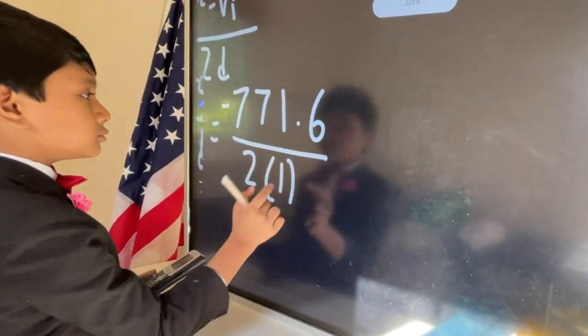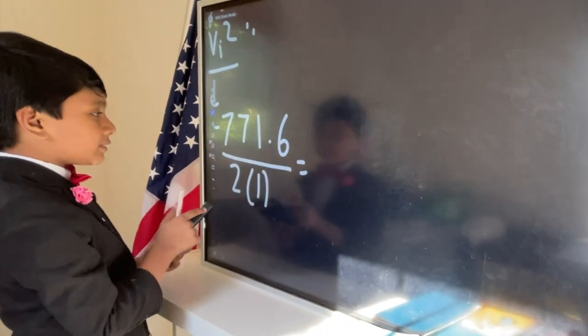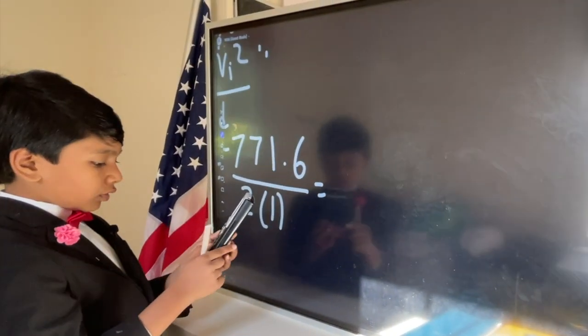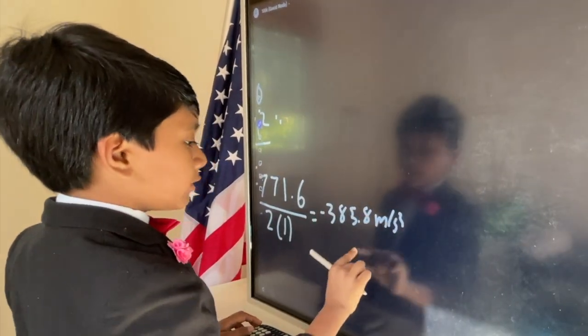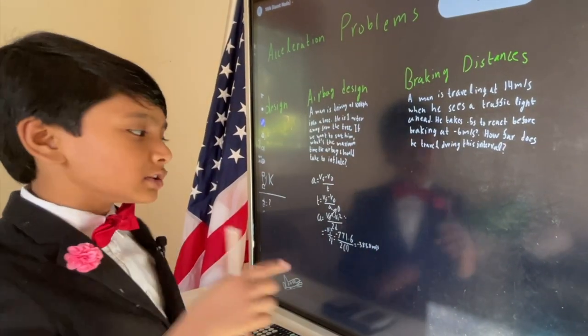So 2 times 1 gives you minus 771.6 over 2, so we get 385.8 meters per second squared as the acceleration. But that's not all.